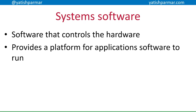Software refers to the programs and operating data of a computer system. System software is the software that actually controls the hardware and allows other software to run. Application software refers to all the software that we use to perform specific tasks.